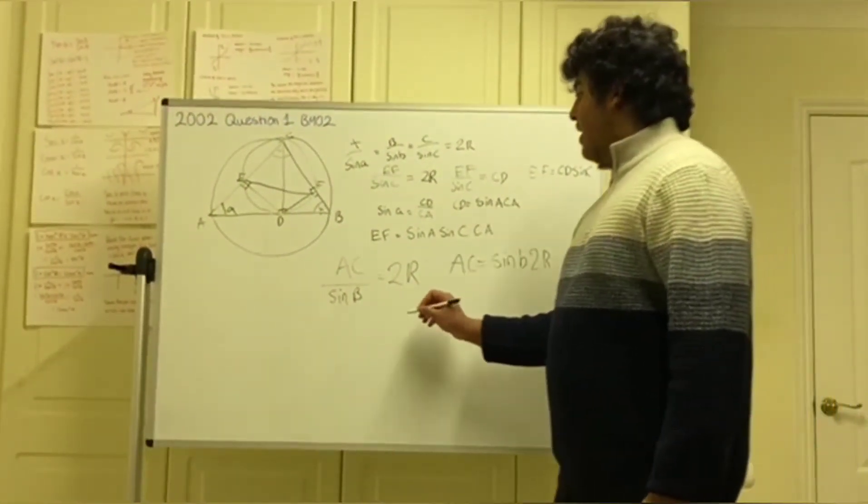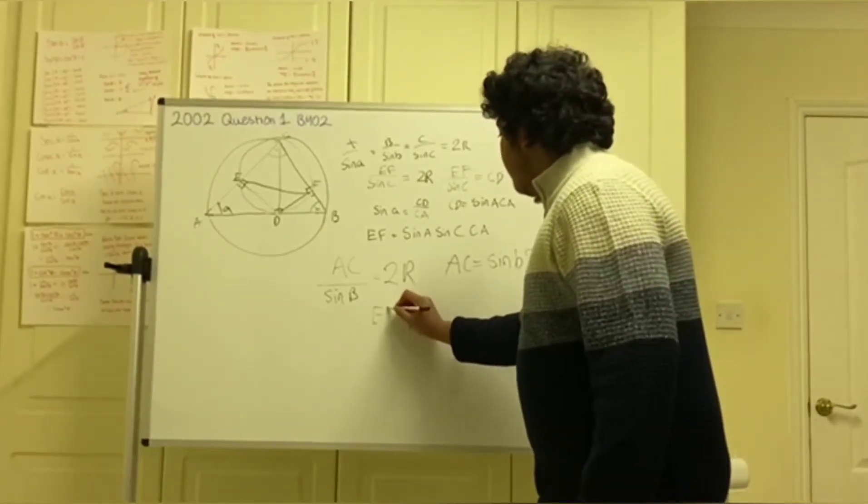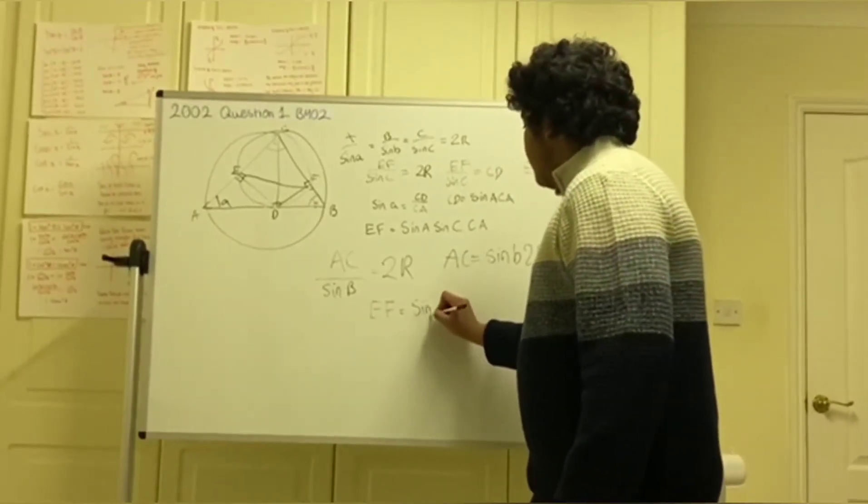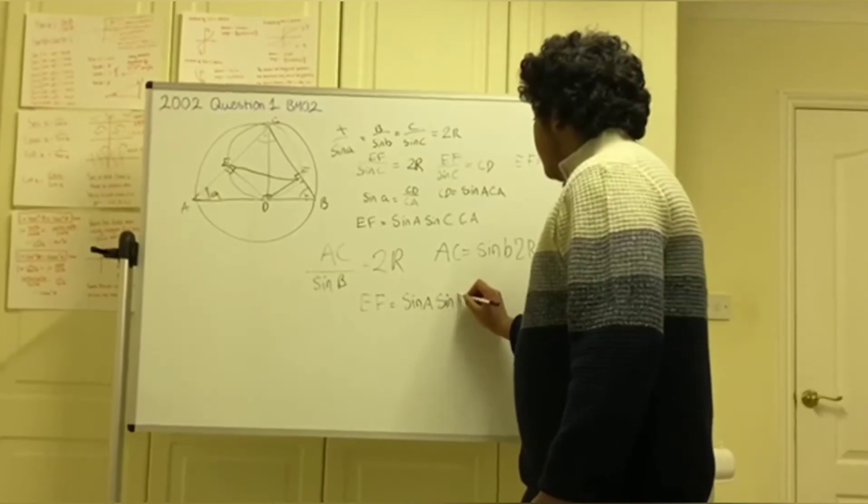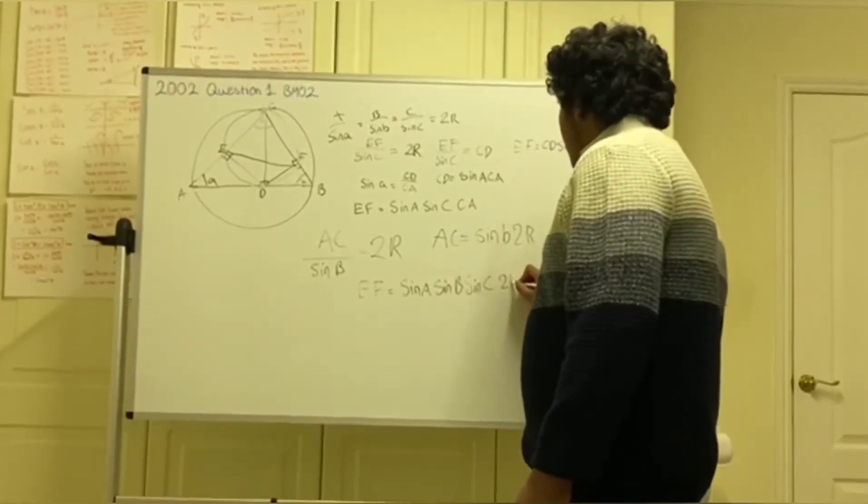And when we substitute that back in there, we get that EF equals sin A, sin B, sin C times 2R.